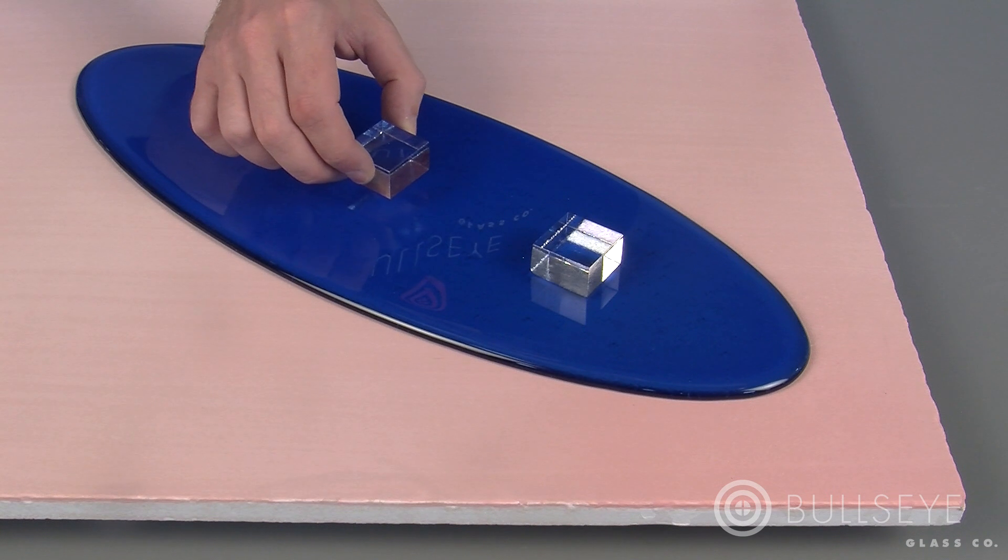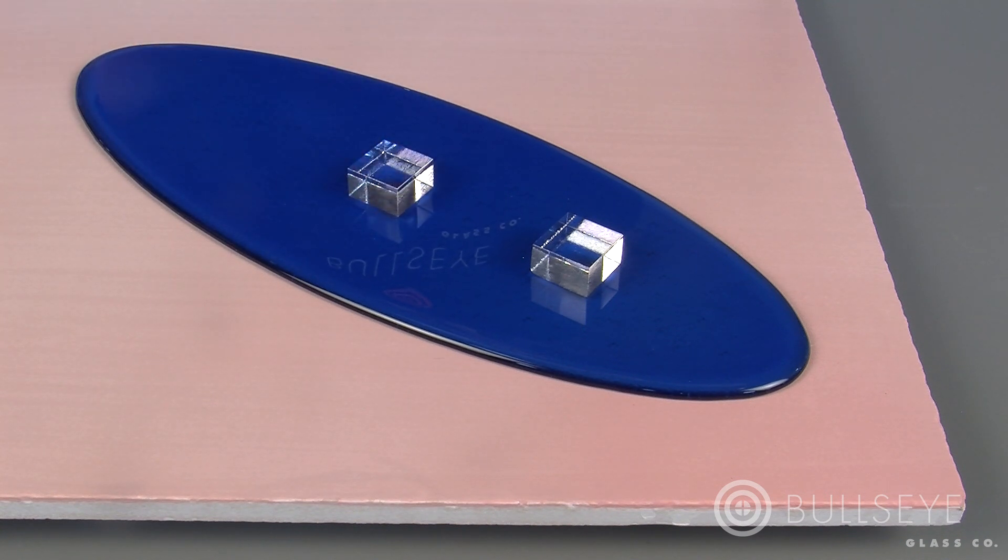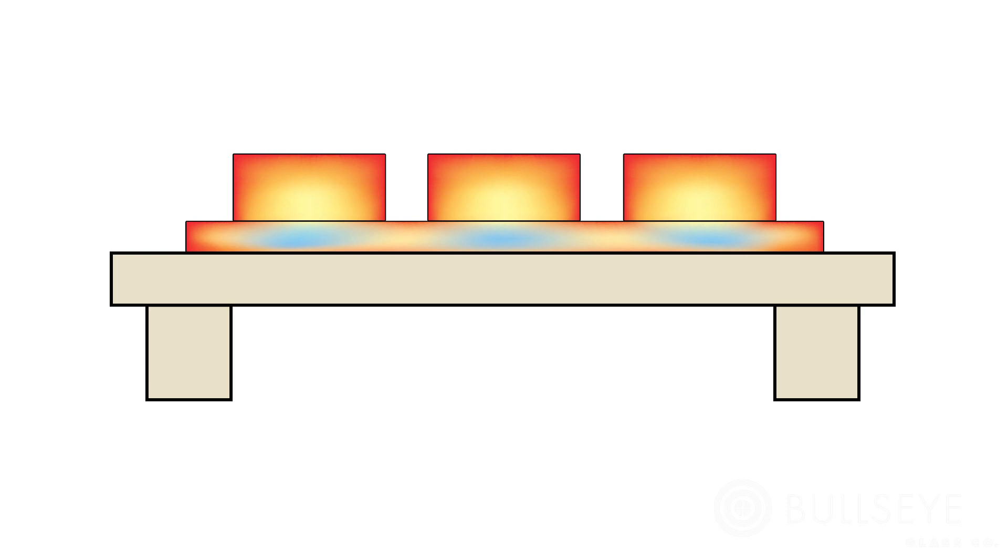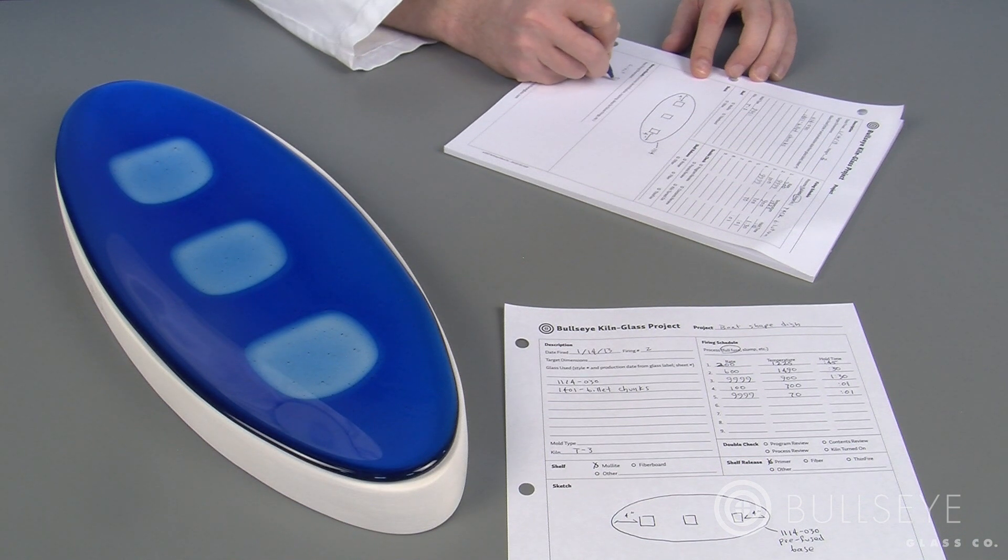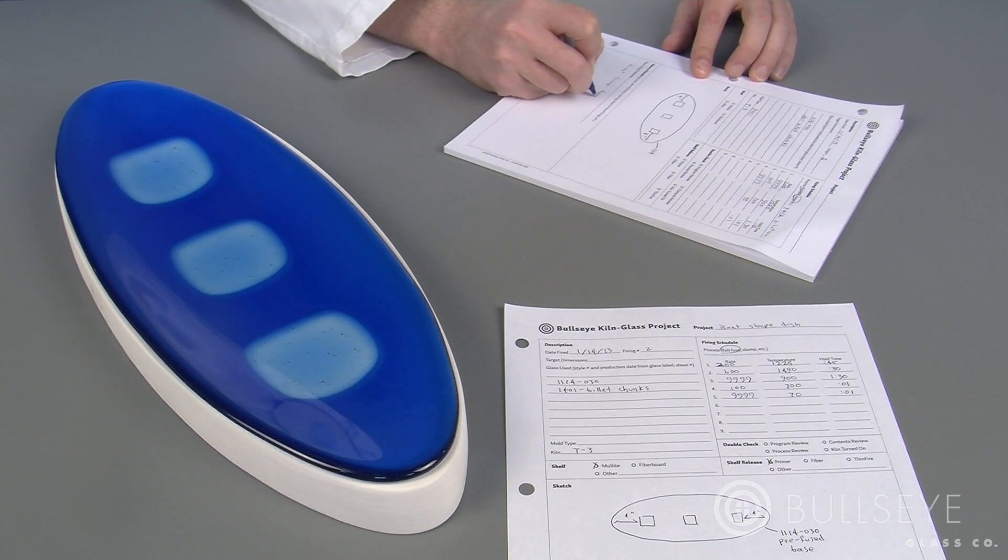Temperature differences that lead to thermal shock are often amplified in work that has uneven thicknesses. Parts placed on top of continuous layers will insulate the glass beneath them, leading to uneven heating and internal stress. The way to avoid this kind of thermal shock is to slow down heating and cooling rates to account for any uneven thickness within a piece.